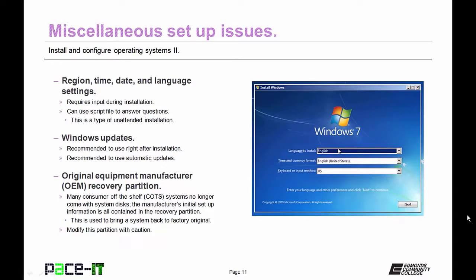It's recommended that you use Windows Update right after installation to make sure everything's current, and then automate updates by setting a time for the process. The last thing to consider is the OEM recovery partition — many consumer off-the-shelf systems no longer come with system disks; it's all contained in the recovery partition, which brings the system back to factory originals including all default programs. Use caution when modifying that partition.